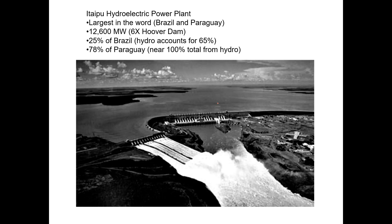The Itaipu hydroelectric power plant, prior to Three Gorges Dam, was the largest in the world. It's split between Brazil and Paraguay and produces power that is six times that of Hoover Dam, at about 12.6 gigawatts. It produces 25% of the power needs for Brazil and close to 80% for Paraguay, where hydroelectric supplies nearly 100% of power generation.